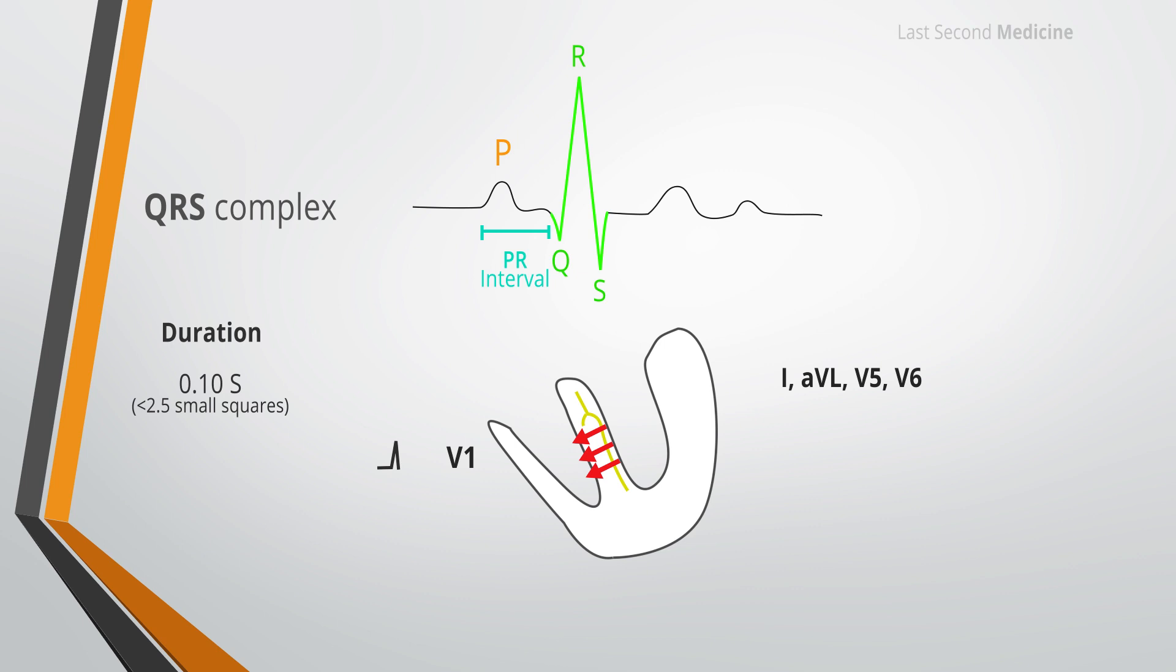The same wave at this time is moving away from lead 1, AVL, V5 and V6. Small septal Q waves are often present in these lateral leads. These non-pathological Q waves are less than 2 small squares deep and less than 1 small square wide and should be less than 25% of the amplitude of the corresponding R wave.